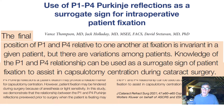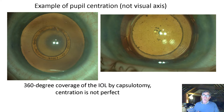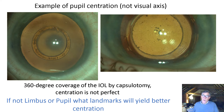If you use the Purkinje images — as in a study from Vance Thompson, Jack Holliday, and David Strevivan — you can use these Purkinje images in a special relationship that gives a surrogate sign of patient fixation to assist in capsulotomy centration during cataract surgery. Here we can see an example of pupil centration not on the visual axis, which has resulted in 360-degree coverage but not centration of the IOL where you'd like it to be.